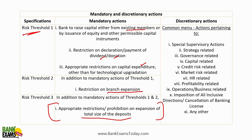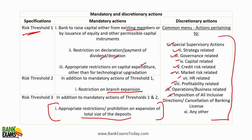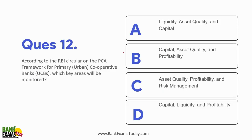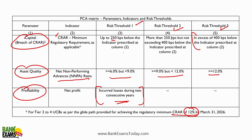Other discretionary actions from RBI - RBI can take many other actions. Special supervisory actions can be taken related to strategy, governance, capital, credit risk, market, HR, profitability, and operations of the business, including imposition of all of the above. These are discretionary, while on the other side are all the mandatory actions that RBI can take.